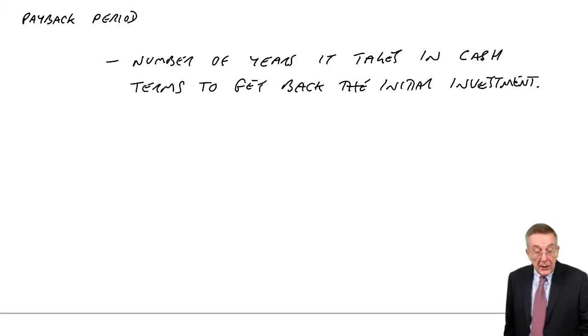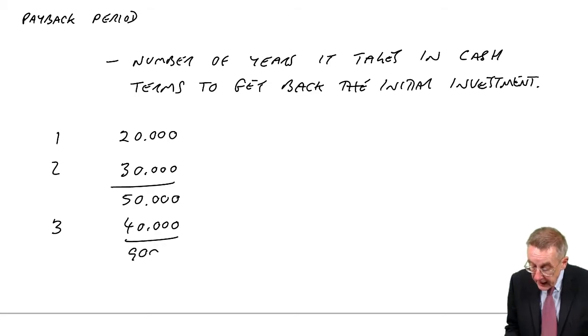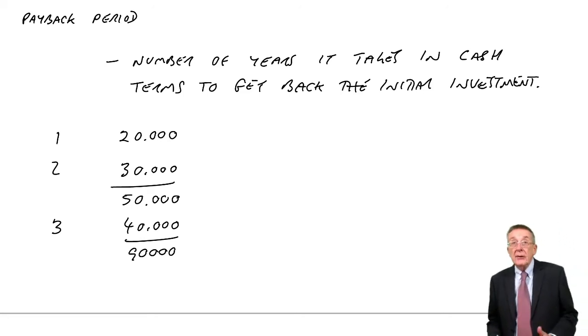I want to know how many years will it take to get back that hundred that we've spent. After one year, how much have we got back? 20,000. That's not enough. We need another 80. After two years, we get another 30, so we've now had a total of 50. But it's still not enough. I want to know how many years to get back the original hundred. After three years, we get back another 40, so we've now had a total of 90. We're nearly there, but we've still not got back the full hundred.